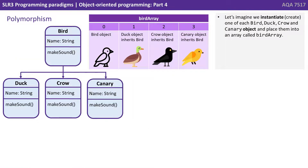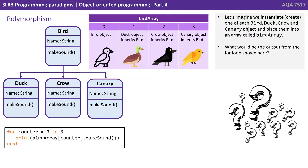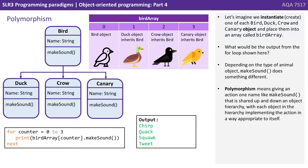Let's imagine we now instantiate or create one of each bird — duck, crow, and canary object — and place them into an array called birdArray. What would be the output from the loop shown here? For counter equals 0 to 3, that's going to go through each element of the array, printing birdArray[counter].makeSound. Depending on the type of animal object, make sound does something different — it outputs chirp, quack, squawk, tweet.